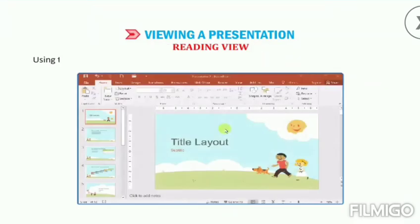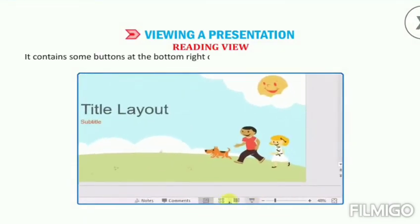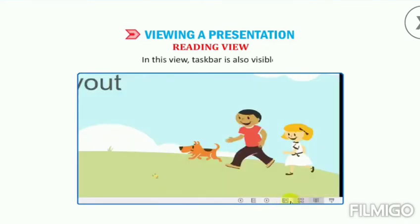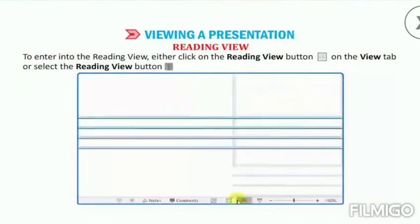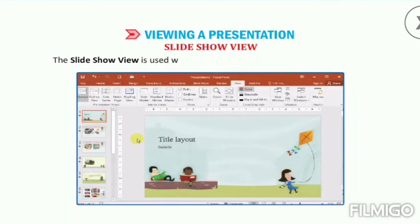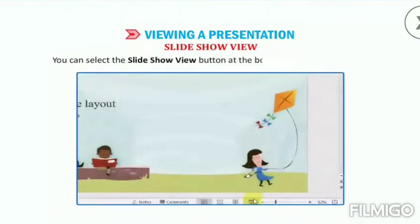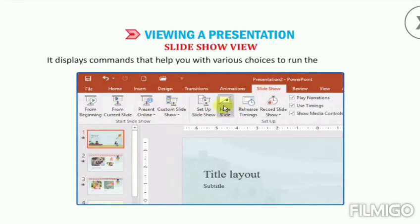Using Reading view, you can view the presentation as a slide show that fits within a window. It contains buttons at the bottom right corner that allow you to navigate through your presentation and switch to other views. In this view, the taskbar is also visible. To enter into Reading view, either click on the Reading View button on the View tab or select the Reading View button at the bottom of the slide window. The Slide Show view is used when you deliver your presentation to an audience. It displays all the slides in the presentation one by one on the full screen. You can select the Slide Show View button at the bottom of the slide window or select the Slide Show tab, which displays commands that help you with various choices to run the presentation.